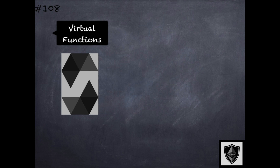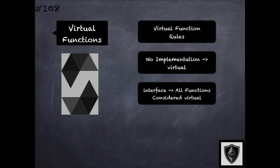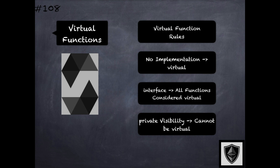Virtual functions are functions without implementation. These have to be marked as virtual outside of interfaces. In interfaces, all functions are automatically considered virtual, so they don't need to use the virtual keyword. However, in abstract contracts, if a function has to be considered as virtual without specifying an implementation, then it should specifically use the virtual keyword to indicate as such. Functions with private visibility cannot be made virtual. These are some of the rules within Solidity for virtual functions.